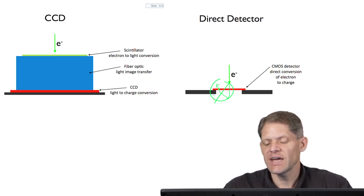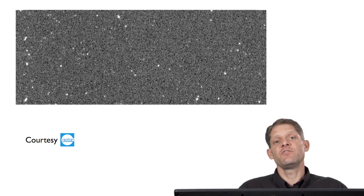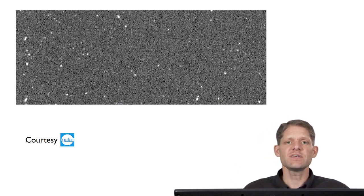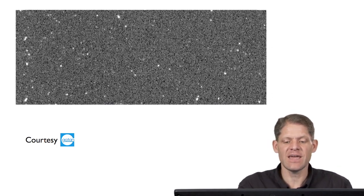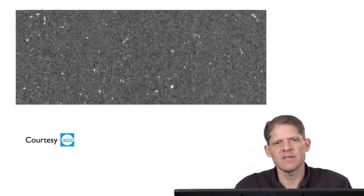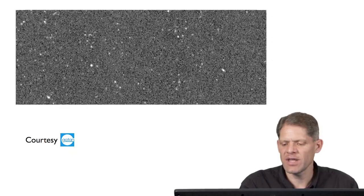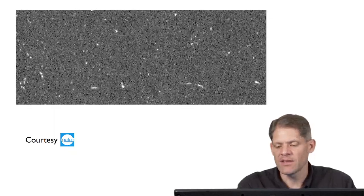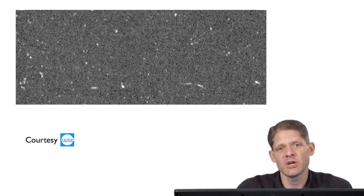These CMOS detectors can be read out hundreds of times a second. The advantage of being able to read out the image at hundreds of times a second is illustrated well in this movie, which was recorded by the Gatan Company. What you see is the live feed from a camera, slowed down significantly, as electrons are hitting the camera. Each electron produces a little burst of counts. Some of the bursts are bright, and some are less bright because of the stochastic nature of the interaction of the electrons with the material of the CMOS chip.